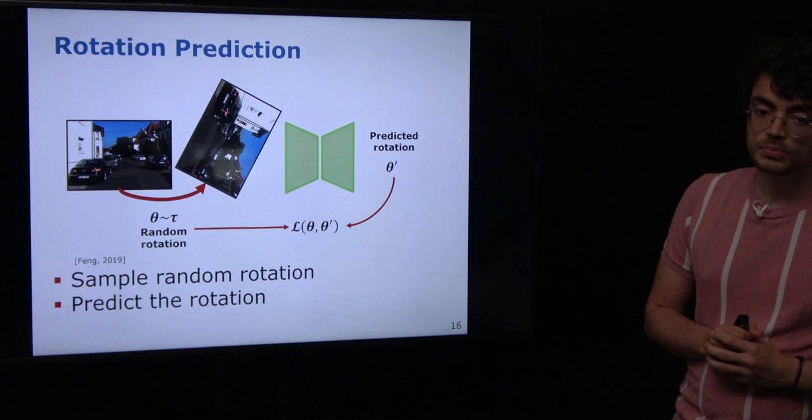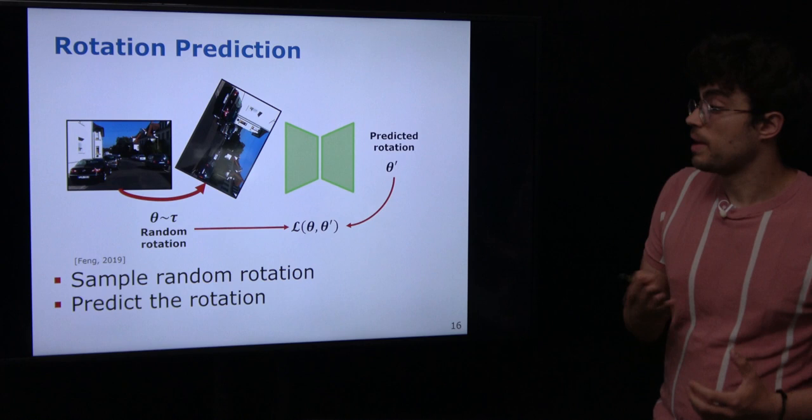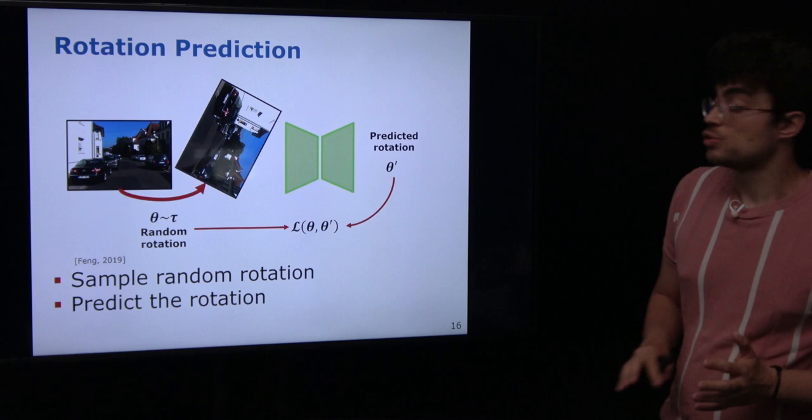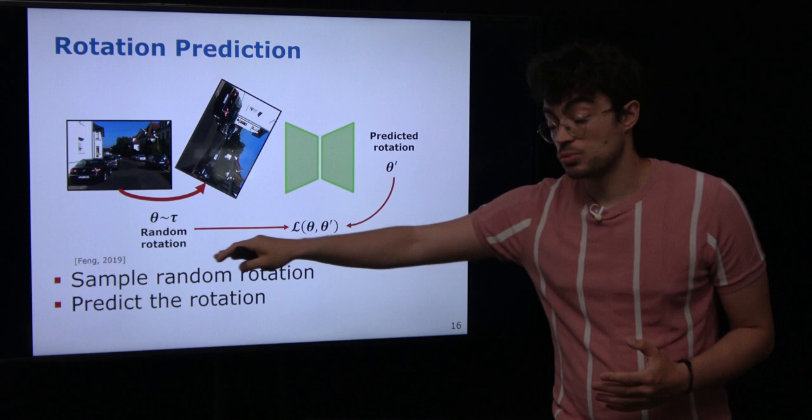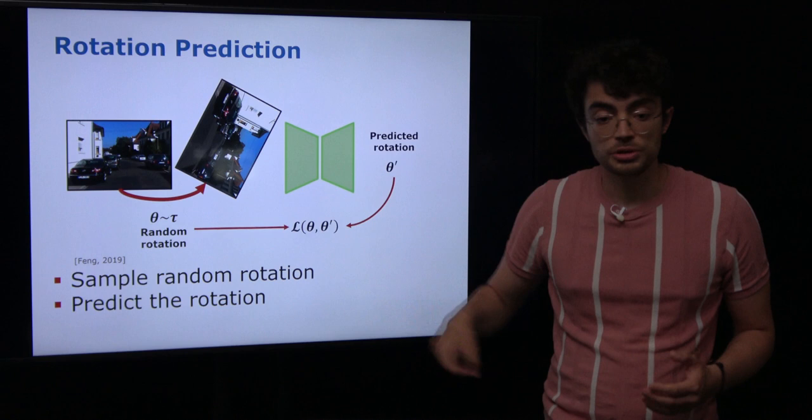One example of a pretext task is rotation prediction. We take one image, sample a random rotation, apply this rotation to the image, and then the task for the network is to predict what rotation was applied. We can directly supervise this because we sampled the rotation, so we know the predicted and actual target rotation.